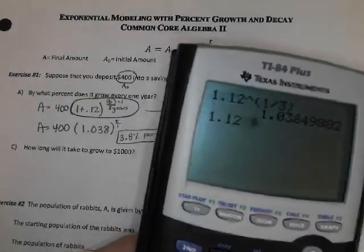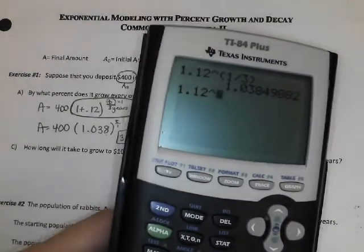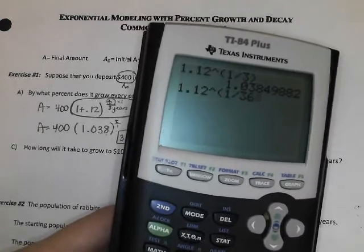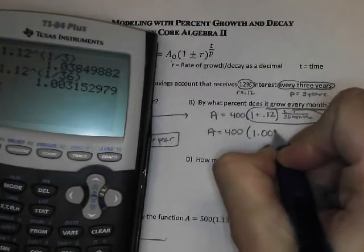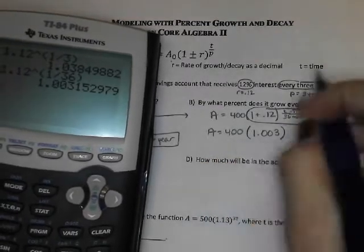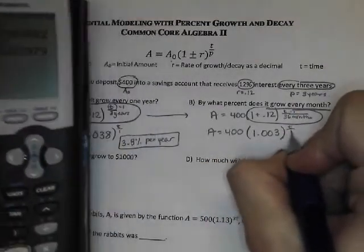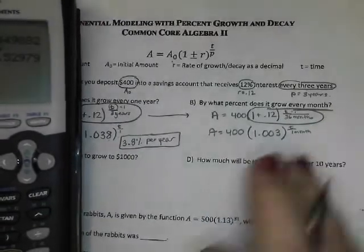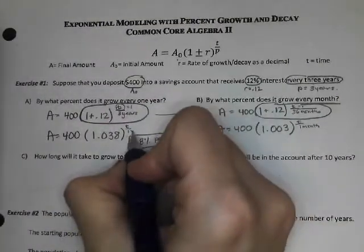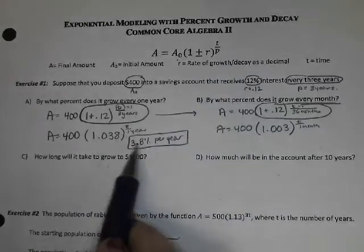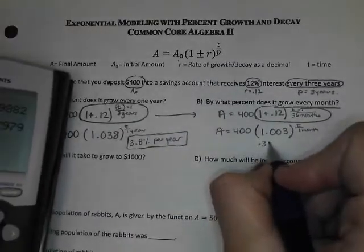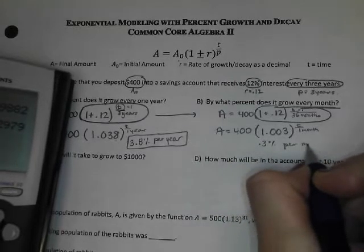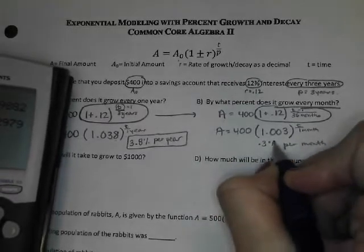And so now, I plug in one there, and this part will tell me the monthly growth. So I'm going to rewrite my formula. I'm going to type in 1.12 to the 1 over 36 power. And that tells me that my new base is 1.003 to the T over 1 month. This is 0.3% growth per month.